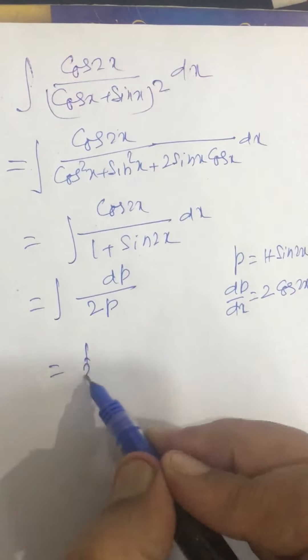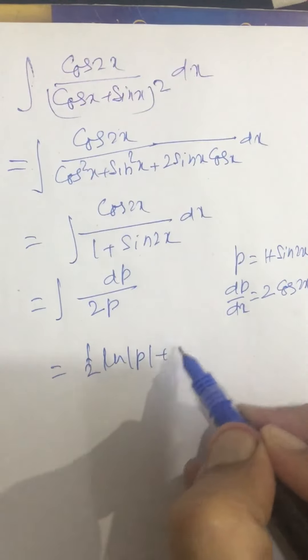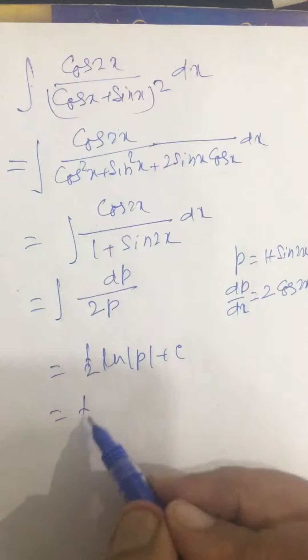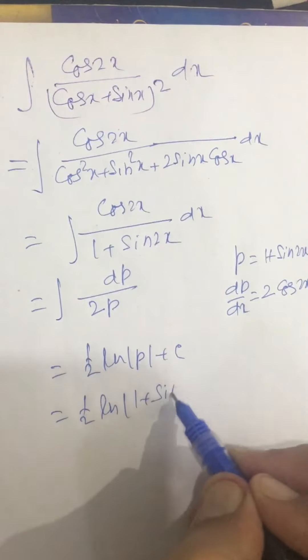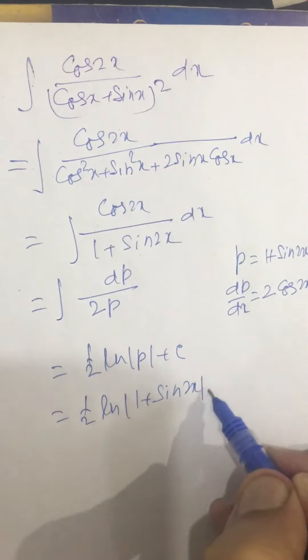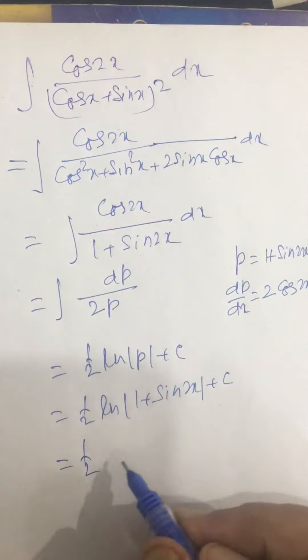This becomes half log p plus c, equal to half log (1 plus sin2x) plus c. This we can write as half log...